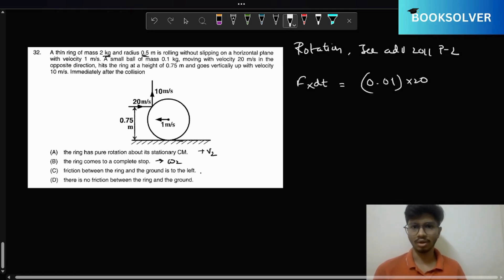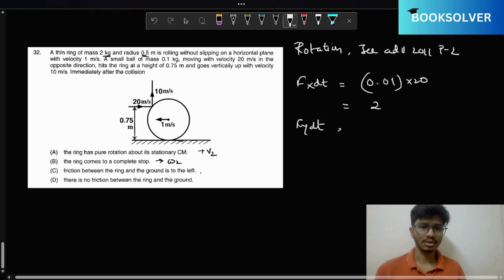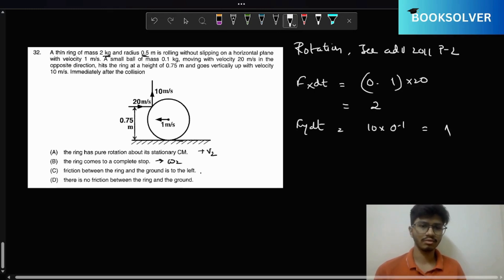That's for the small ball. Yeah, it would be 2. The change in momentum of the small ball in the x direction is 2, which implies the change in momentum for the ring would be 2. And Fy dt equals 10 into 0.1, so that would be 1.